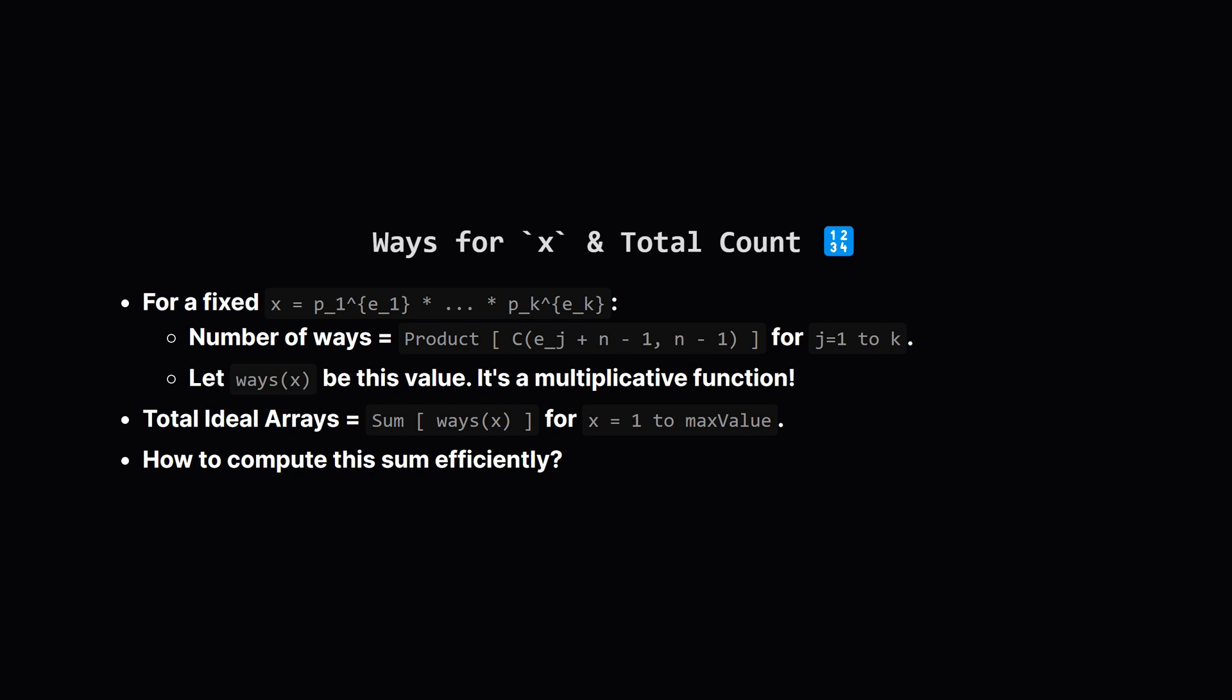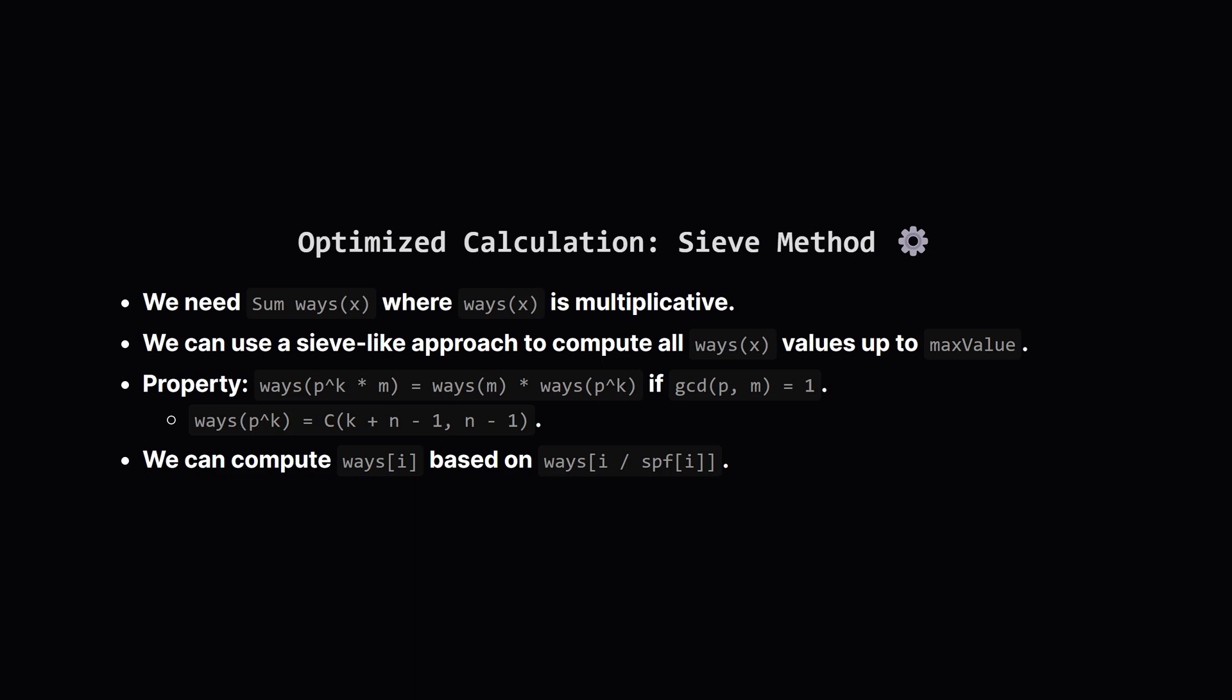Interestingly, this function ways(X) is multiplicative. Now the final answer we want is the sum of ways(X) for all possible ending values X from 1 up to maxValue. Calculating ways(X) for each X involves factorization, then combinations, and summing them up. We can do better. Since ways(X) is a multiplicative function, we can use a sieve-like method, similar to the Sieve of Eratosthenes, to calculate all ways(X) values efficiently up to maxValue. The key property is that if a prime p doesn't divide M, then ways(p^K × M) is simply ways(p^K) × ways(M). And we know ways(p^K) is just that combination value C(K+n-1, n-1). We can build up the ways array. We'll pre-compute the combination values for prime powers. Then using a sieve to find the smallest prime factor SPF of each number, we can calculate ways(i) by looking at ways based on the exponent of SPF in i.